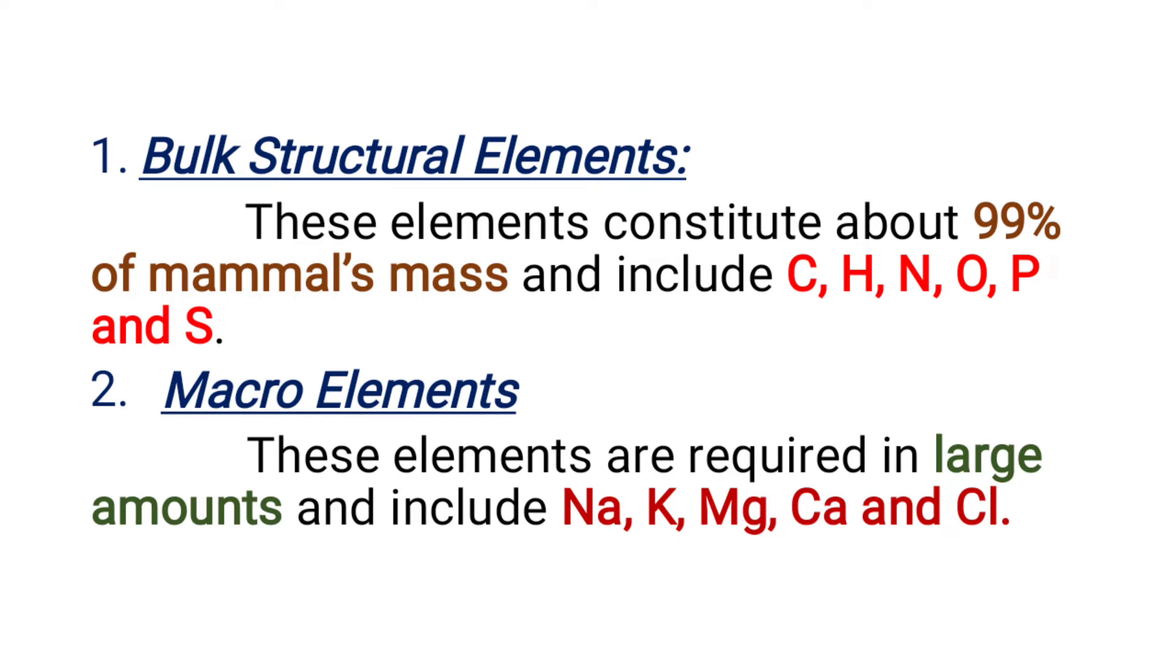The second category is macro elements. Macro means being large. These elements are present at a somewhat large quantity, but not as much compared to bulk elements. These include sodium, potassium, magnesium, calcium, and chlorine.